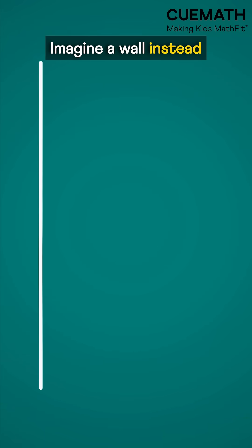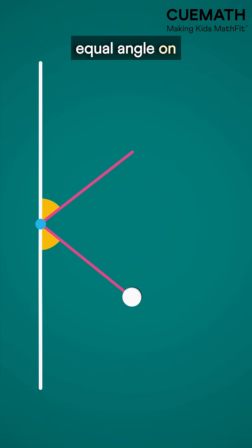Why does it work? Imagine a wall instead of the curved table. The ball hits the wall at an angle, reflects and makes an equal angle on the other side.